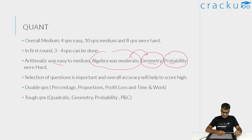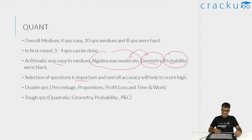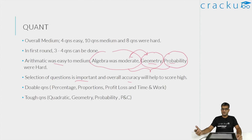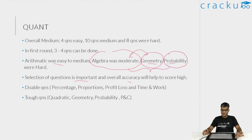Arithmetic was definitely easy. Algebra was designed to be difficult. There were some questions involving both algebra and geometry, with equations based on the number of diagonals — those were definitely lengthy, so ignoring them is fine. But there were straightforward geometry questions you should definitely attempt and get correct. Selection of questions is important, and overall accuracy will help. Don't have a mental block about topics you're not comfortable with, because there will be easy questions even in those topics — as was very clear this time where very few people attempted geometry and probability.